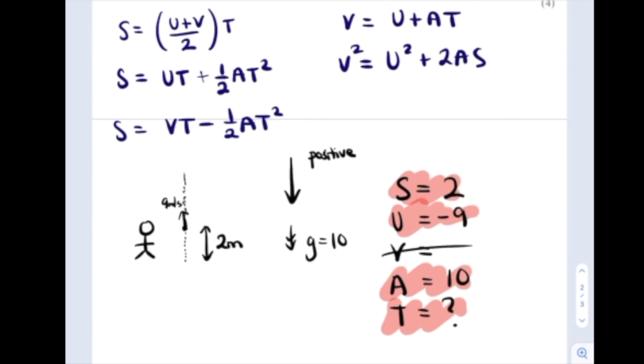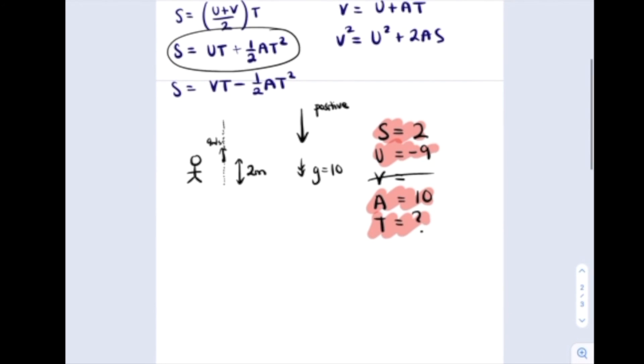It's got the S, the U, the T, and the A. What we'll have to do is rearrange this with all the information that we know put in for the unknown value that we want, which is T. So S equals UT plus one half AT squared. But with our values, 2 equals minus 9 times T plus one half times 10 times T squared.